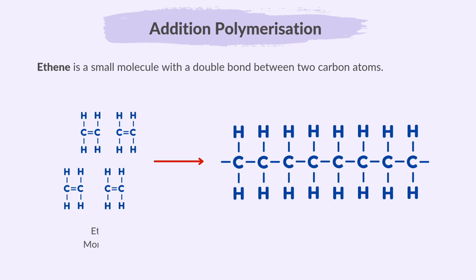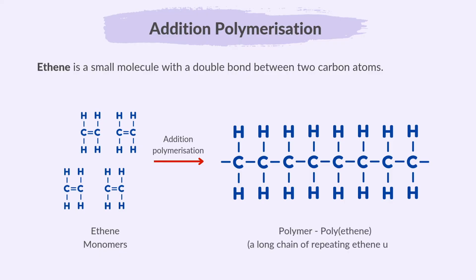During polymerization, the double bond breaks and many ethene molecules link up, forming a chain — that is the polymer. Ethene monomers undergo addition polymerization to form polyethene, a long chain of repeating ethene units. These ethene units are now linked together by single bonds, so the polymer formed will only contain single bonds.